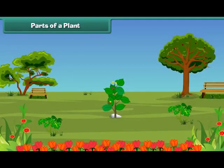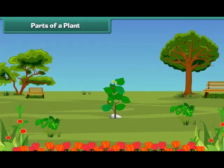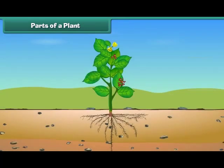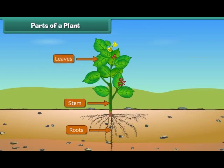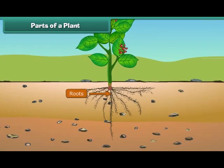Friends, let us discuss various parts of a plant. The main parts of a plant are roots, stem, leaves, flowers, and fruits. Let us know them one by one in more detail. Roots are the lower part of a plant. They grow in soil and help the plants to get water and minerals from the soil.